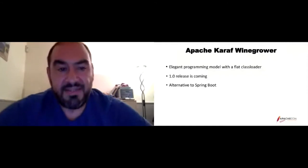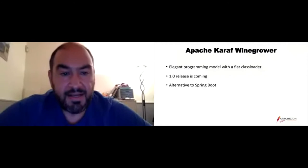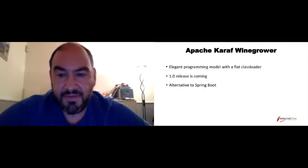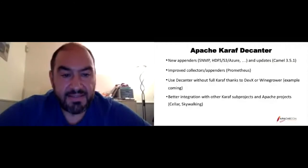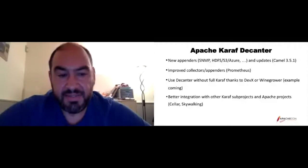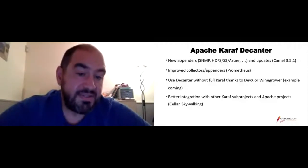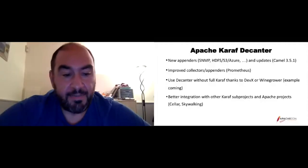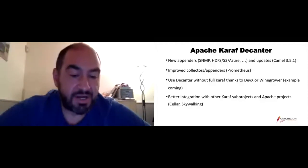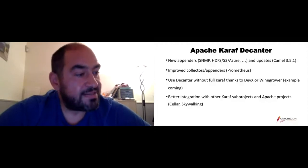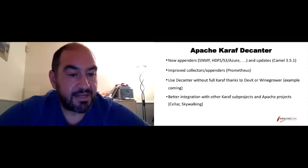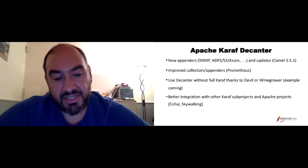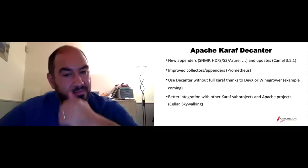Some news about Karaf Decanter: new appenders are coming — SNMP, HDFS, S3, and others. There are improvements on existing collectors and appenders. You can use Decanter in both the Karaf runtime and in OneGrow. We're also planning better integration with Karaf subprojects and Apache projects — thinking about better leveraging Cela, since Cela will facade the JClouds and Kubernetes APIs, and projects like Apache Skywalking.